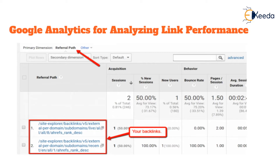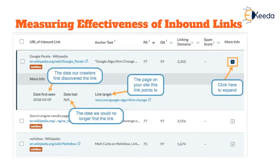However, Google Analytics doesn't let you determine in detail what the anchor text is. For that kind of information you can use paid platforms like Moz, Ahrefs, or SEMrush, which give you information about where your inbound link is located and other qualitative details about each link.